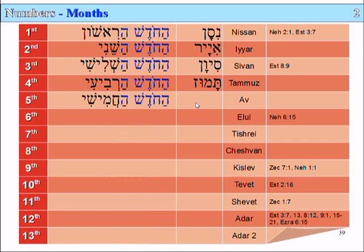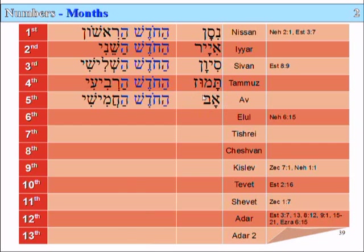The fifth month is Ha-Khodesh Ha-Khamishi. And this is called the month of Av. We know that Av means father, among other things. It's during the month of Av that we have the destruction of the temple. Tisha B'Av is the ninth of Av, and both temples were apparently destroyed on that day.